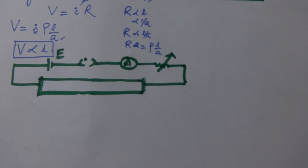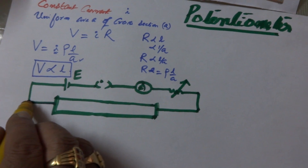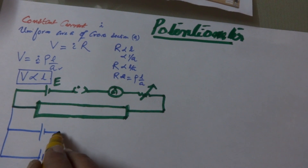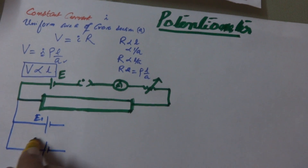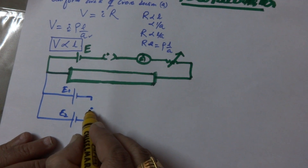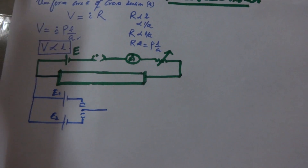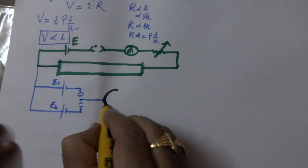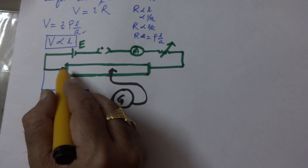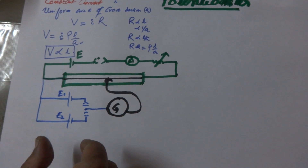We are interested in comparing the EMF of two primary cells. Here, one primary cell has EMF E1 and another has EMF E2. A two-way key is placed here, and from this we attach the galvanometer. The jockey of the galvanometer is to be gently tapped on the wire of the potentiometer. This circuit is useful to compare the EMF of two primary cells.